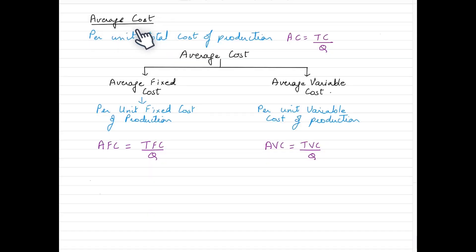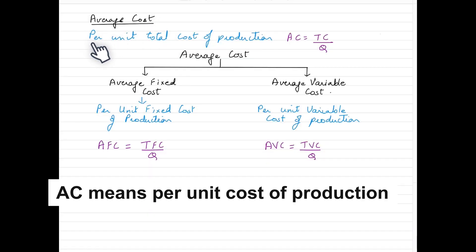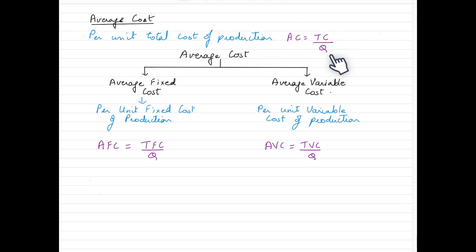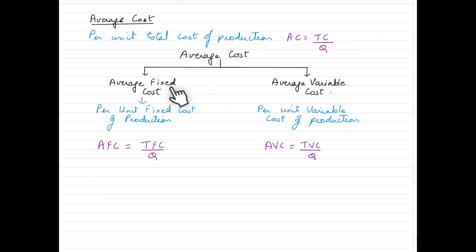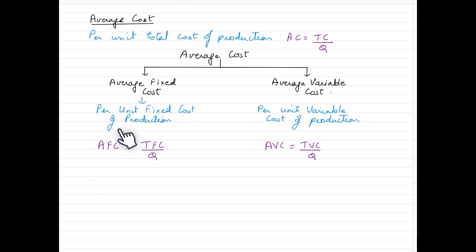Just to have an overview: average cost means the per unit total cost of production. We calculate average cost as total cost over quantity. Average cost is divided into two categories — first is average fixed cost and the second is average variable cost. Average fixed cost is basically the per unit fixed cost of production, whereas average variable cost is the per unit variable cost of production.